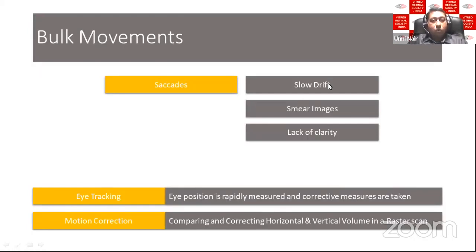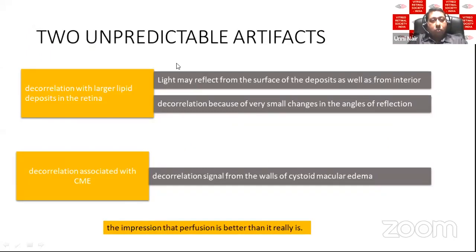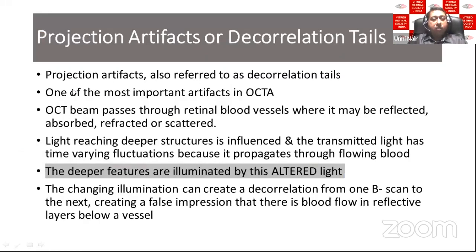Slow drift of the eye can cause lack of clarity. Eye movements are corrected by eye tracking or software motion correction. There are also movements within the eye — pulsating choroidal lobules produce Z-axis motion artifacts, usually managed by the system. Two unpredictable artifacts that mimic motion artifacts are: decorrelation from large wet lipid deposits or hard exudates producing bright spots, and cystoid macular edema walls producing artificial vascular markings.